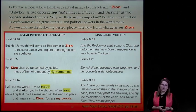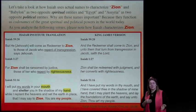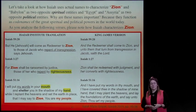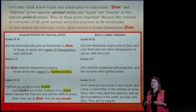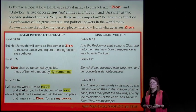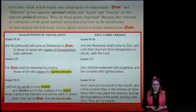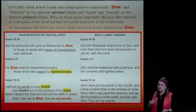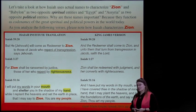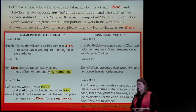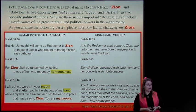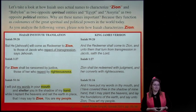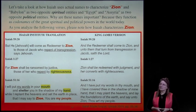Remember our cycle: there is apostasy and judgment, then restoration and salvation. We are in need of repentance in Egypt. Isaiah chapter 1: 'For Zion shall be ransomed by justice, those of her who repent by righteousness.' And in Isaiah 51: 'I will put my words in your mouth and shelter you in the shadow of my hand'—that's the other hand, the right hand.